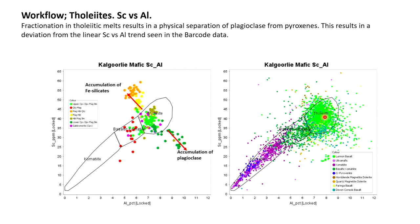If you're fractionating a tholeiite, it involves some process that physically separates pyroxenes and plagioclase. The plagioclase has got aluminium, the pyroxene's got scandium — so if you separate those things, plagioclase-rich rocks will have more aluminium and less scandium, while pyroxene-rich rocks will have way more scandium and less aluminium. Any kind of fractionated magmatic intrusion — plot this stuff.